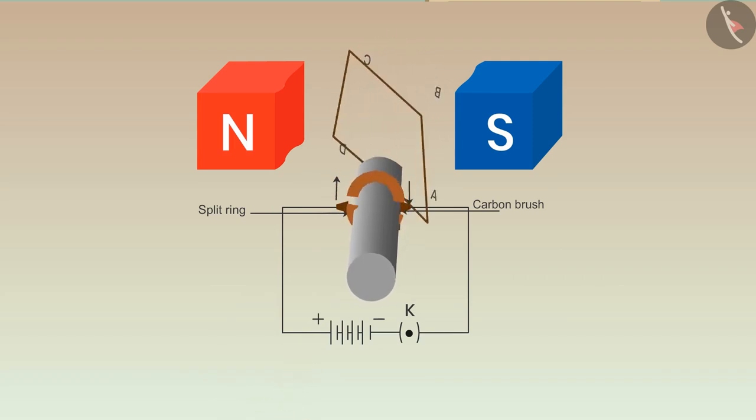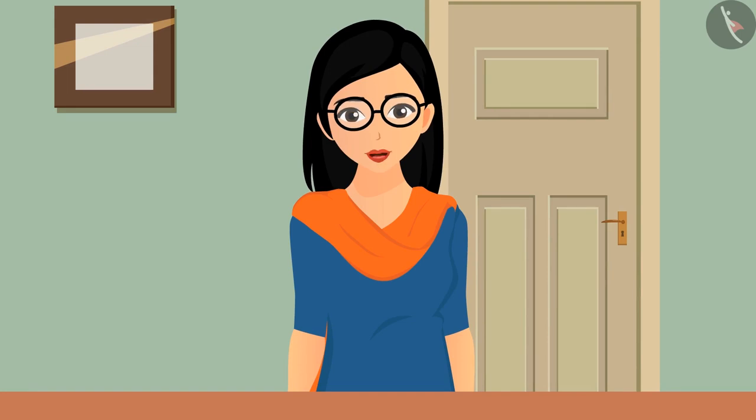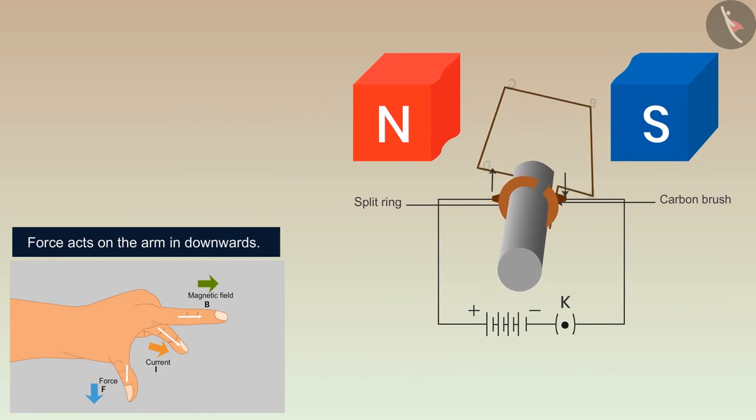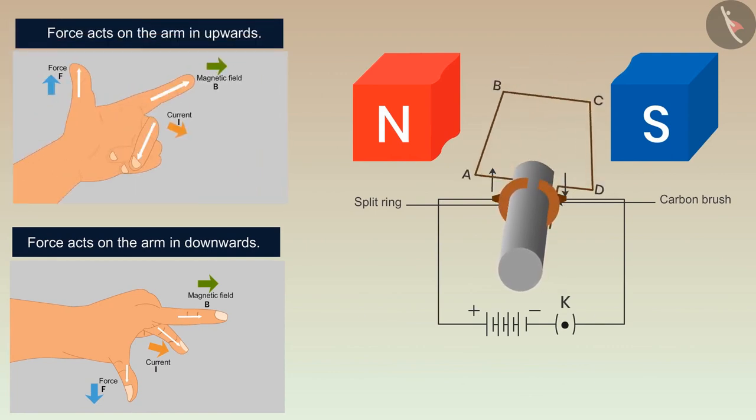Also the force acted on the arms AB and CD will help the motor to keep rotating in one direction by changing its direction. Let's see this for the second time. When the current flows through the circuit, then a force acts on the arm AB and CD in downwards and upwards direction respectively.